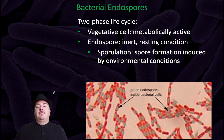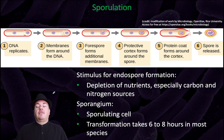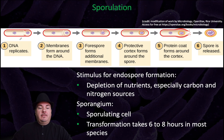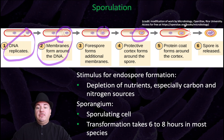Sporulation is spore formation induced by environmental conditions. Bacteria might undergo sporulation when there is some stimulus, such as a depletion of nutrients, especially carbon and nitrogen sources. The sporangium is a sporulating cell, and transformation takes between six to eight hours in most species. To undergo sporulation, the bacteria will replicate its DNA, then form a membrane around this DNA. The forespore then forms additional membranes, a protective cortex forms around the spore, a protein coat forms around the cortex, and the spore is released.